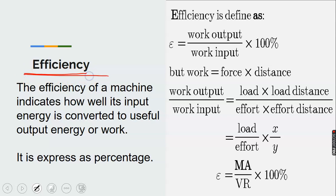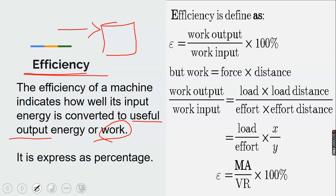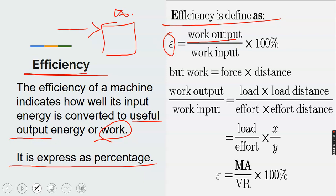Efficiency: the efficiency of a machine indicates how well its input energy is converted to useful output energy or work. It is expressed as a percentage. The formula is: efficiency equals work output over work input times 100%. We know that work is defined as force times distance.